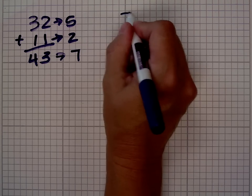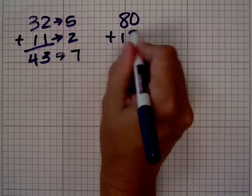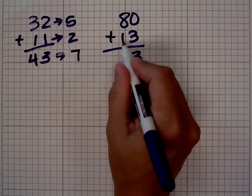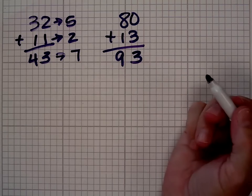Let's try another problem. 80 plus 13. 0 plus 3 is 3, 8 plus 1 is 9, so our answer is 93.